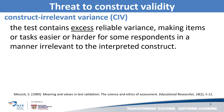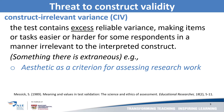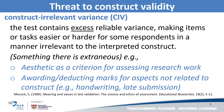The test contains excess reliable variance, meaning there are extraneous items that make it difficult for some students to demonstrate their understanding. Another example of construct irrelevant variance, or CIV, is including aesthetics as a criterion for assessing research work. Another example is when we award or deduct marks for aspects not related to the construct — for instance, in a teaching of English essay, marks are deducted for poor handwriting and late submission.